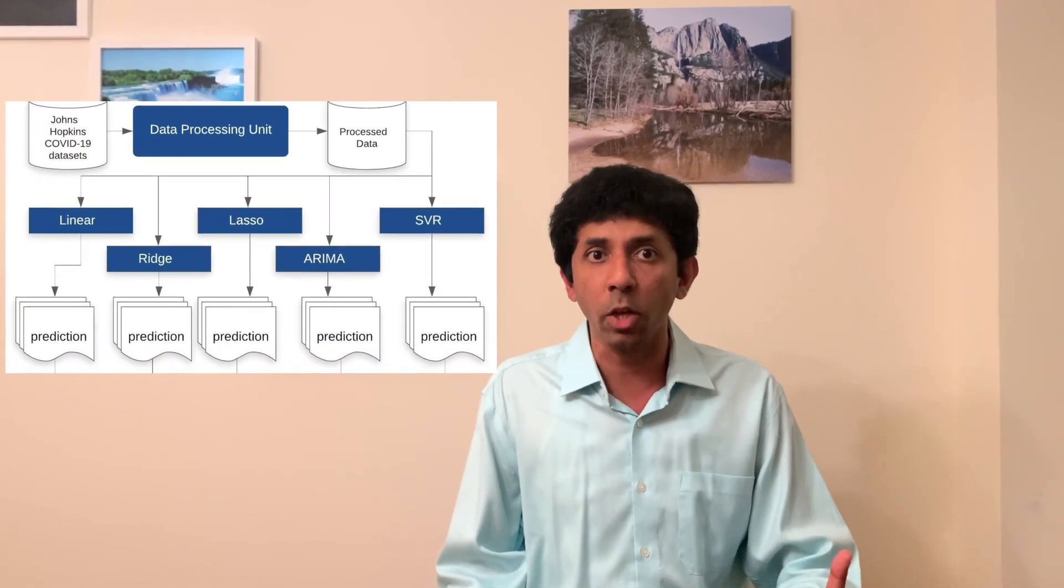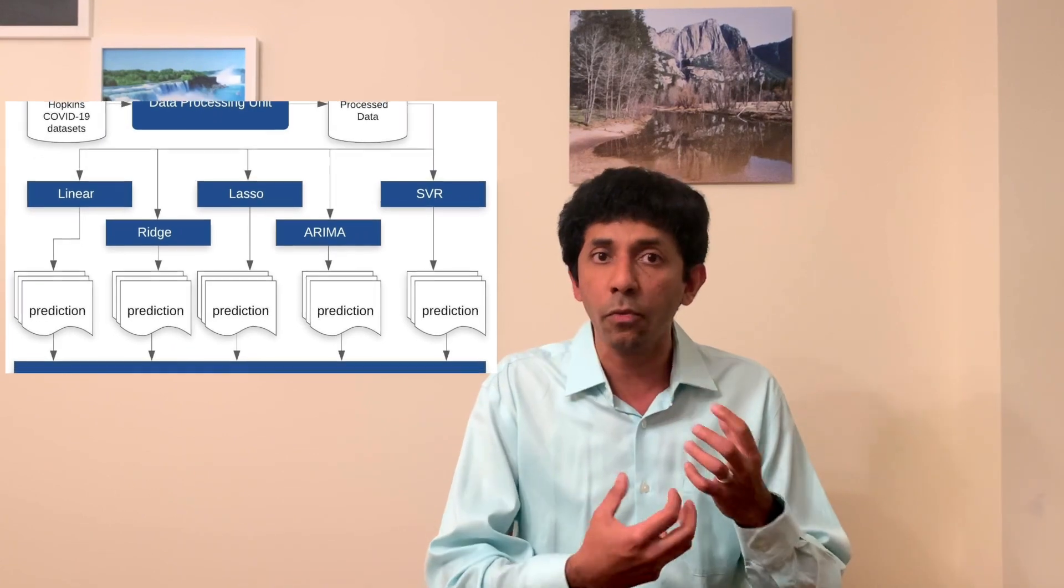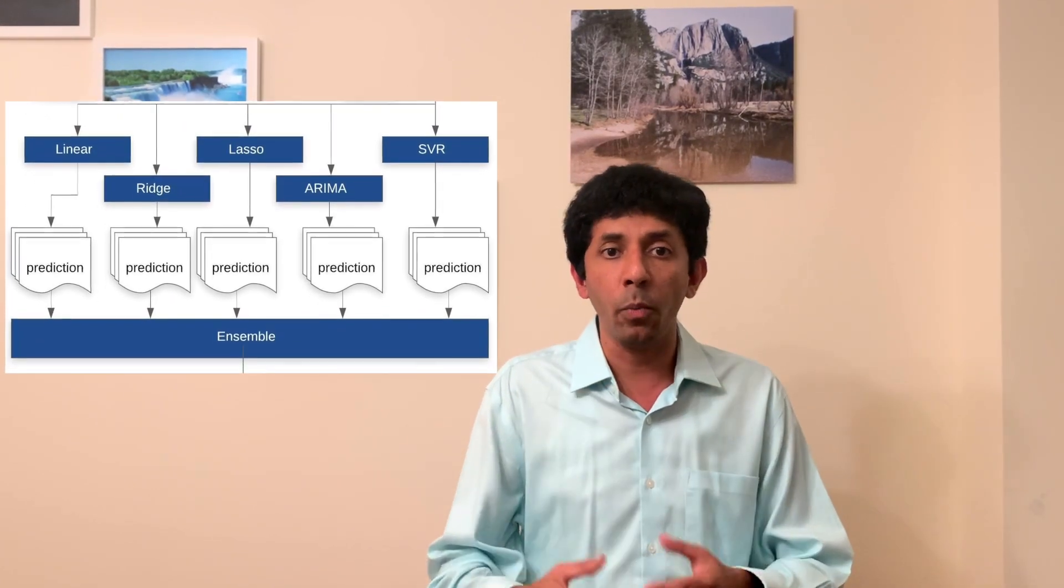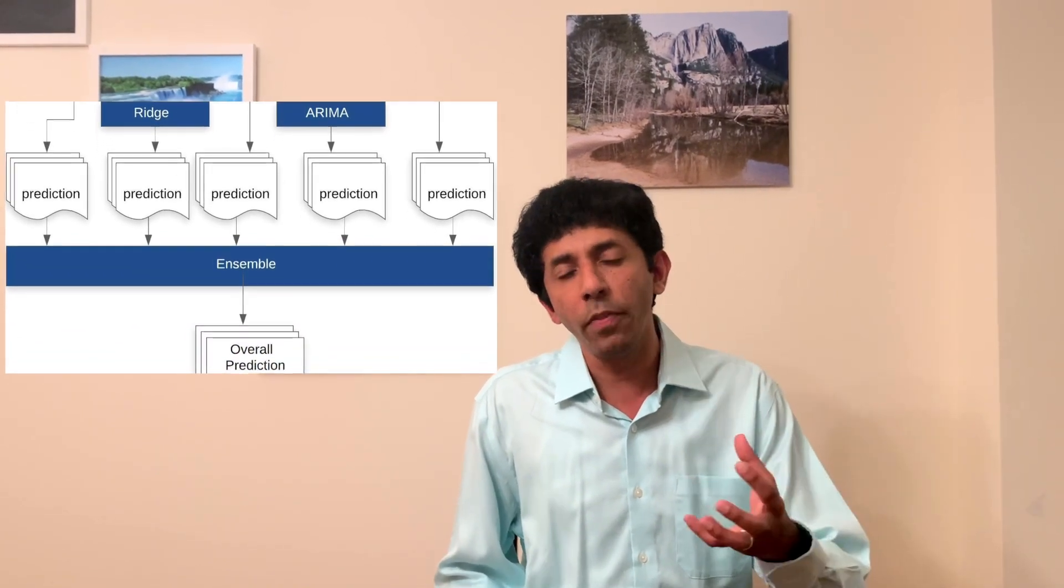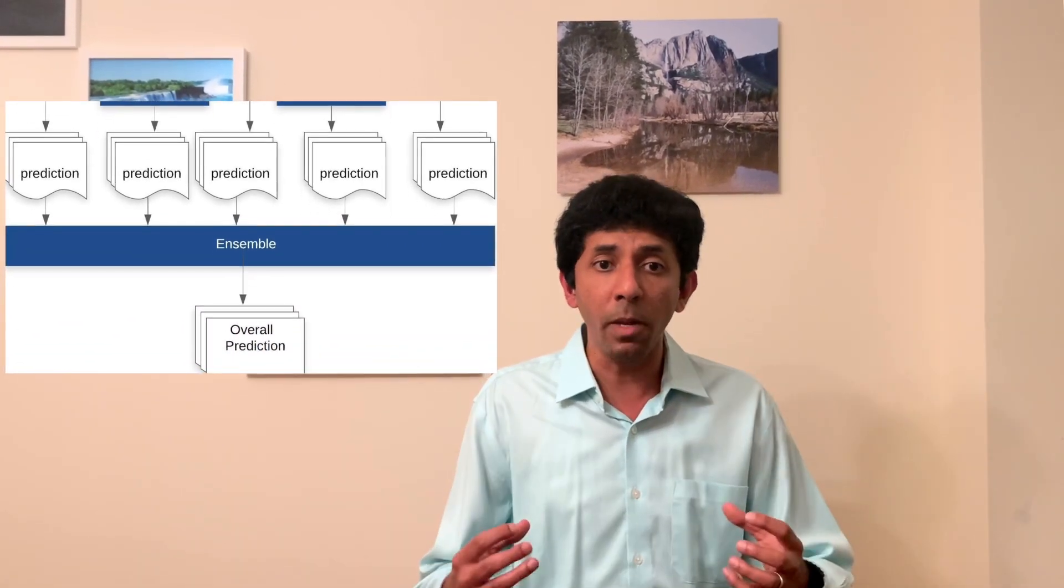This is how the entire setup looks like. You can see that there is a data pre-processing component where we get the data from Johns Hopkins website, then we pre-process the data and then we run the different models on the data, and then we have an ensemble layer which selects the best model. Now the important thing for folks who want to try this out is it's very simple. As I said, the code is publicly available, and even if you want to write your own code to help your local government, you can just use ready-made packages that are there in Python.